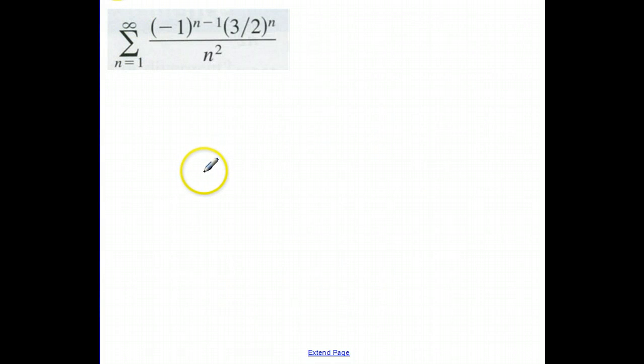Let's do another one. So here I've got an alternating series, negative 1 raised to the n minus 1 times 3 halves to the n over n squared.